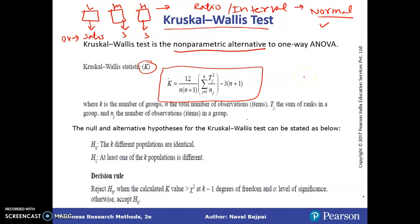So for each group we will compute the T value, we will square it and divide it by Nj, number of observation in that group only. And we add all such values for all such groups.